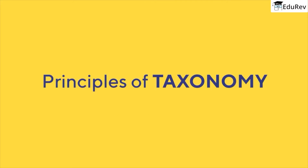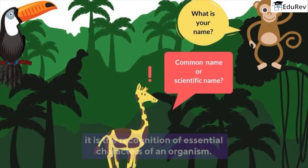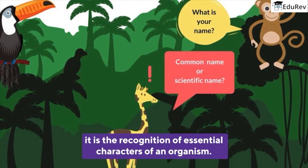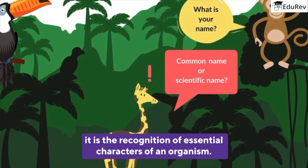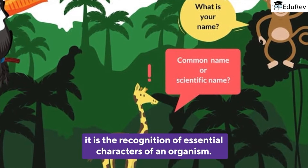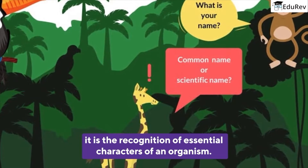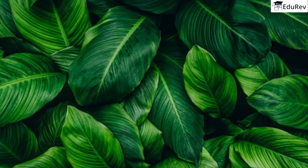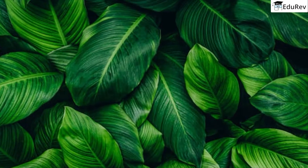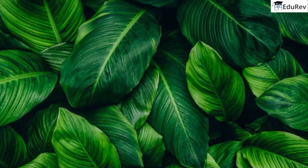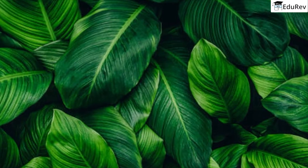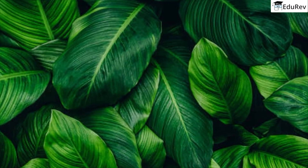Let us understand the first principle of taxonomy — that's identification. It is the recognition of essential characters of an organism. The procedure of nomenclature is based on identification of organisms. For example, when you see a green-colored leaf, you identify it as a plant, as it is a characteristic of a plant.